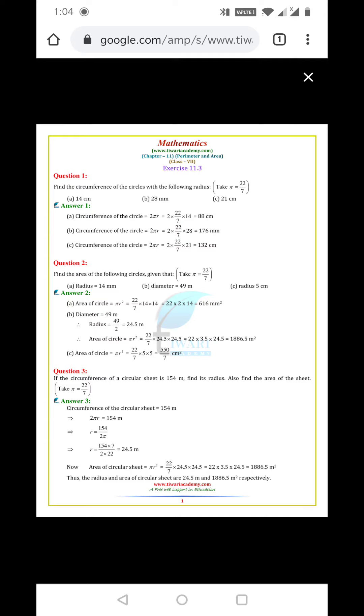Question 3: If the circumference of a circular sheet is 154 m, find its radius. We have the circumference 2πr equals 154 m. So r equals 154 times 7 divided by 2 times 22. Here we get 24.5 m radius.